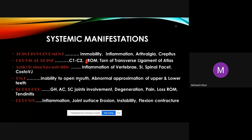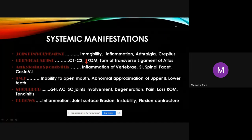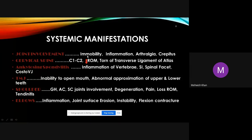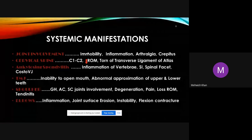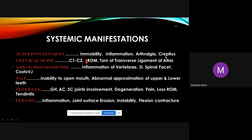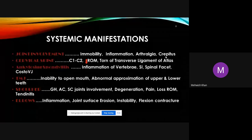Systemic manifestations of RA include joint involvement with immobility, which occurs secondary to pain or fear of pain. This immobility leads to muscular contractures, muscular tightness, and bony changes. Other features include arthralgia, joint pain, and crepitus — audible sounds heard on physical examination in moderate to severe conditions.